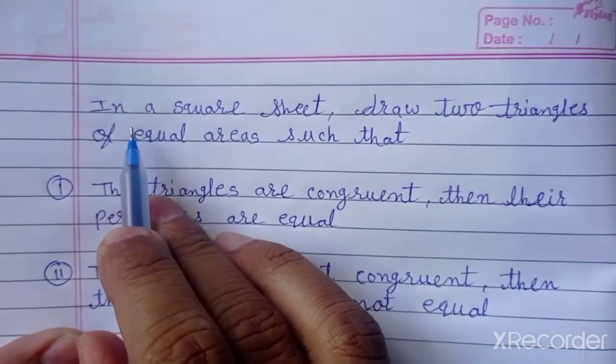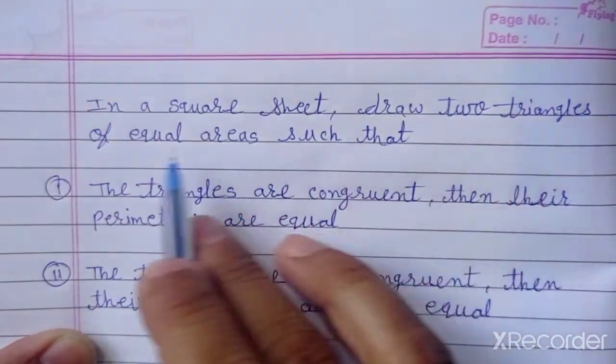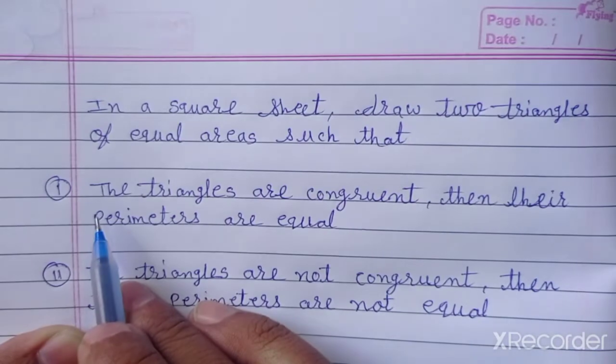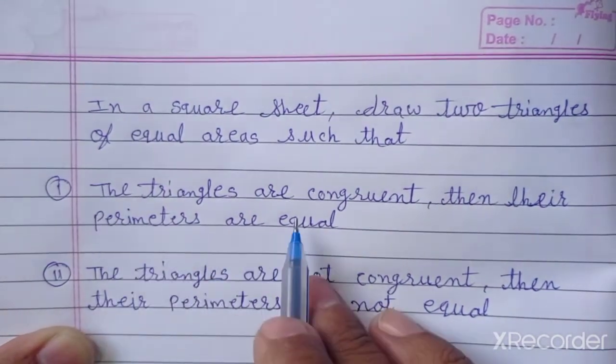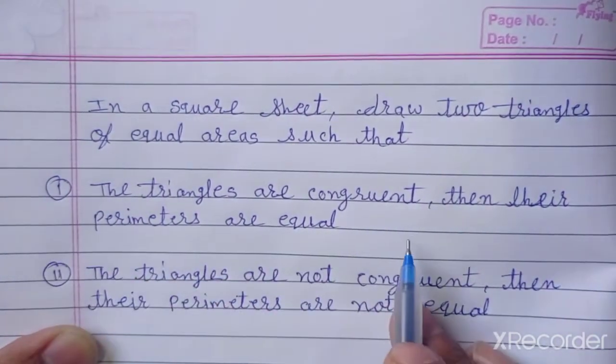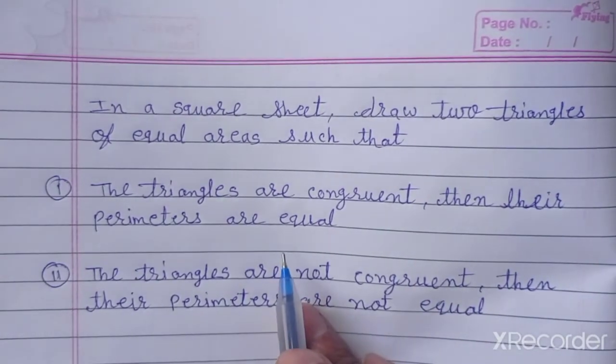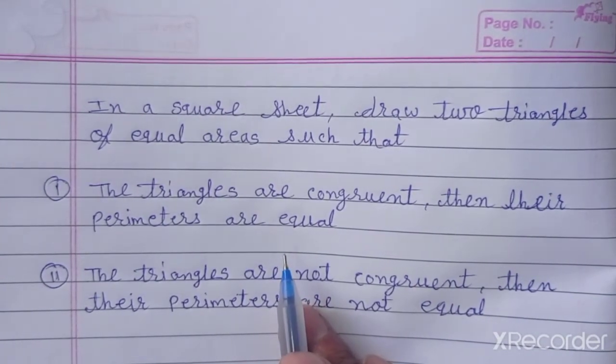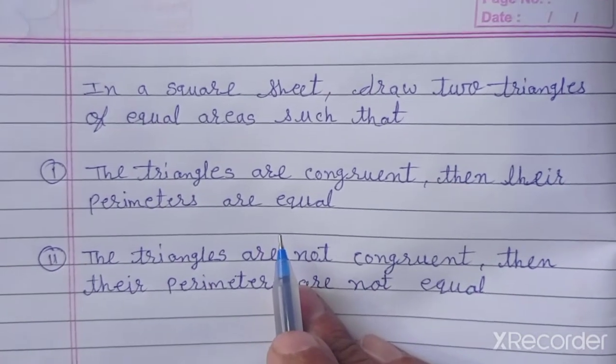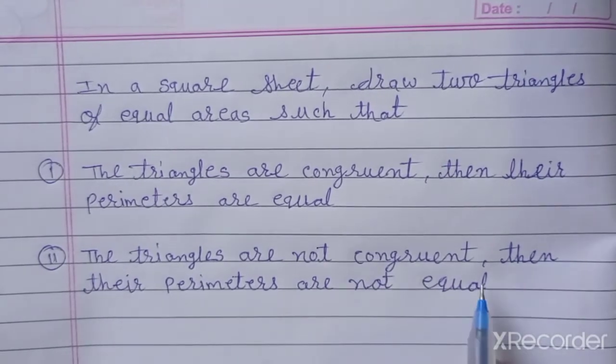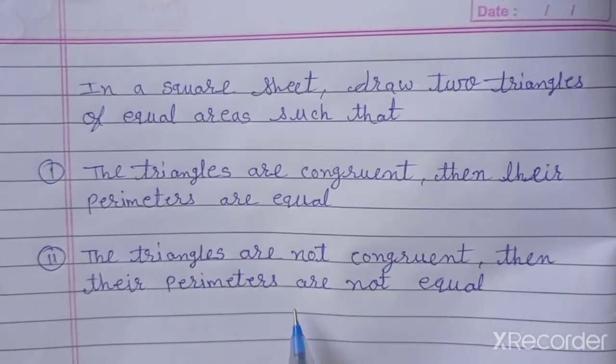Now, for question 1, answer: If the triangles are congruent, then their perimeters are equal. If the triangles are not congruent, then their perimeters are not equal.